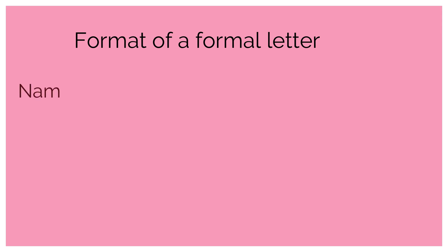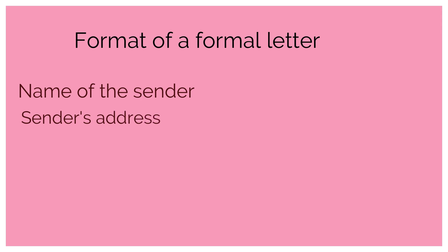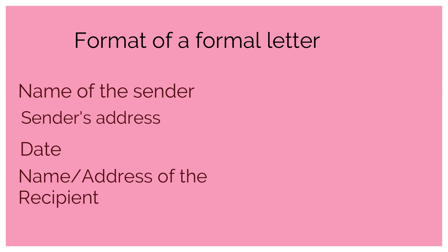The first thing we write in a formal letter is the sender's name and complete address, usually written at the top left-hand corner of the letter. It should be complete and accurate. The sender's address is followed by the date, which is very important for keeping official records. The date is then followed by the address of the addressee — the person you are writing to — also written at the left-hand side of the page.